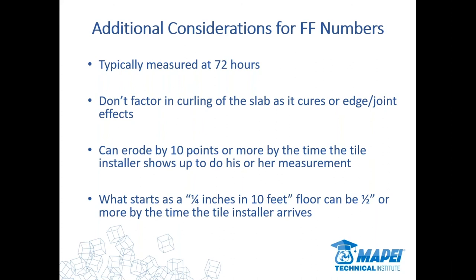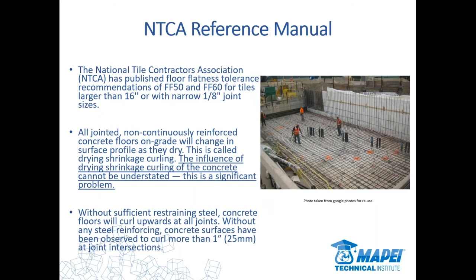Now you're looking at a lot of cost and time to try to repair that. The idea is to have this conversation early on in the process, and there are resources available so you can help get the specification changed. There's likely a design professional who has specified a finished product needing a certain quality of flatness for a proper installation but has not specified that the concrete be finished to that specification — and that needs to be addressed up front. When you're in pre-construction meetings and you get a copy of the plans and specifications, you can look at what FF numbers are called for in the areas you're going to be working in — and that is the time to have this conversation.